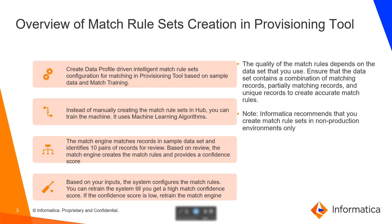You can retrain the system until you get a high match confidence score. If the confidence score is low, you need to retrain the match engine. The quality of the match rule set depends on the data set that you use. Ensure that the data set contains a combination of matching records, partially matching records, and unique records to create accurate match rules.